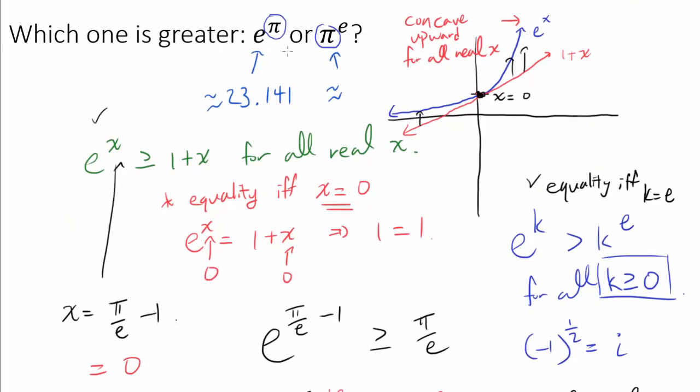So we have shown something stronger than what we set out to prove. We have shown that e to the k is greater than k to the e for every non-negative values of k other than e. By the way, pi to the e is approximately 22.459. And we see once again that e to the pi is greater than pi to the e.